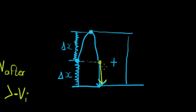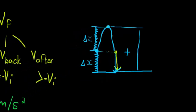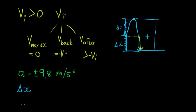Finally, change in time is our independent variable that is usually given so we can calculate values associated with it. Let's go and have a look at a few examples.